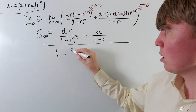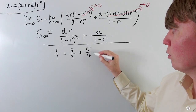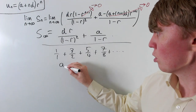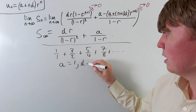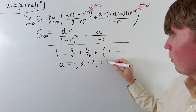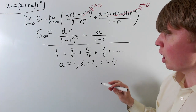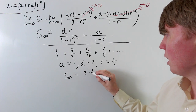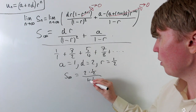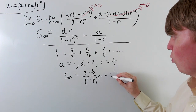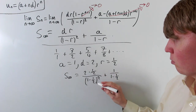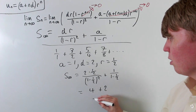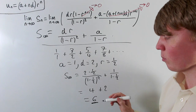Returning to the original problem, 1/1 + 3/2 + 5/4 + 7/8 + …, we identify a = 1, d = 2, and r = 1/2. Plugging into the formula: d·r/(1 − r)² = 2·(1/2)/(1/2)² = 1/(1/4) = 4, and a/(1 − r) = 1/(1/2) = 2. So the infinite sum is 4 + 2 = 6.